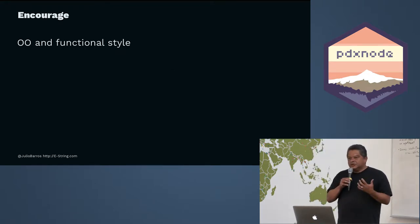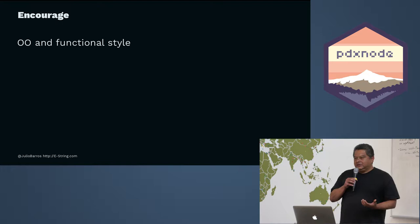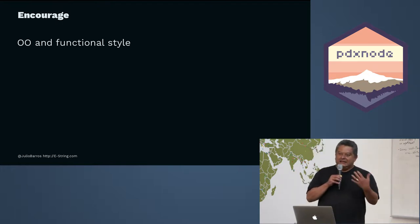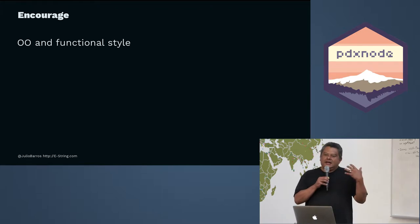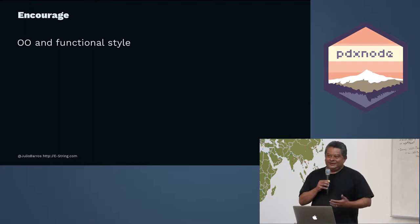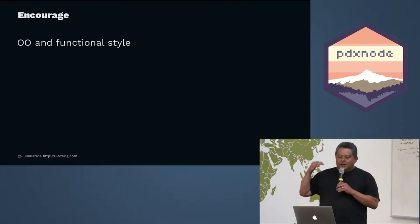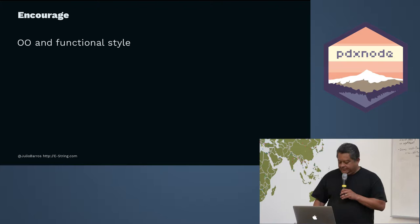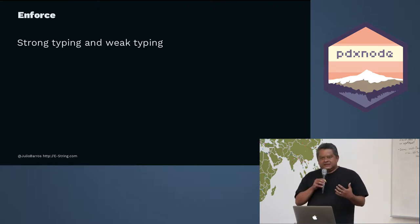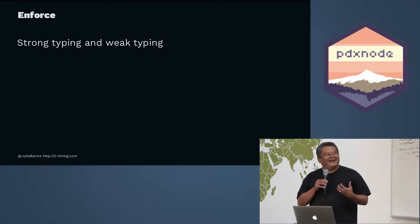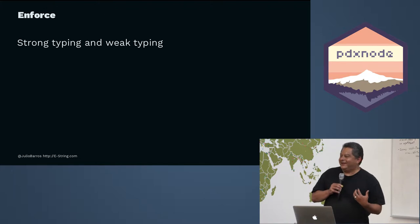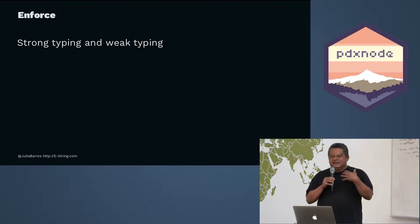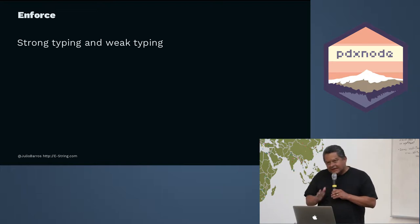The more interesting dimension is 'encourage.' Does your language encourage object-oriented programming? Does it encourage functional programming? You could write object-oriented code in C, but does the language actually encourage that? And then 'enforce' — some languages enforce specific things like strong typing versus weak typing. These are the dimensions we could think about when comparing languages.